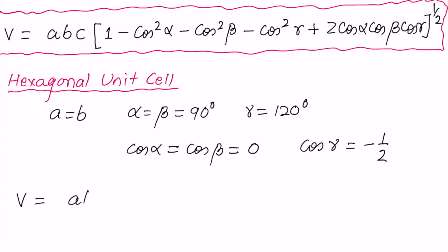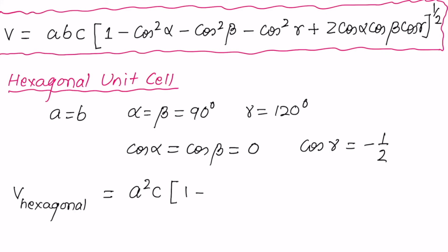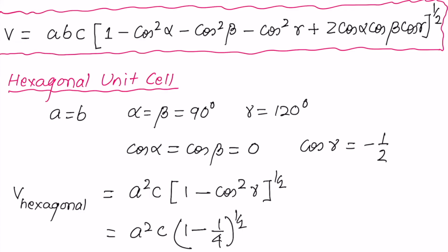Substituting into the general formula gives the volume for the hexagonal unit cell. You get a²c times the appropriate angular factor, which simplifies to √3/2 · a²c.